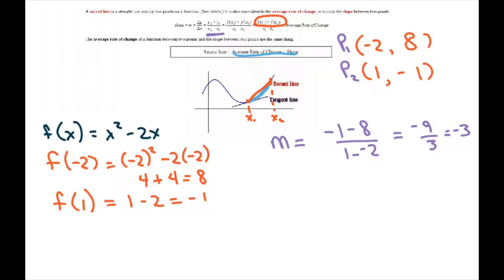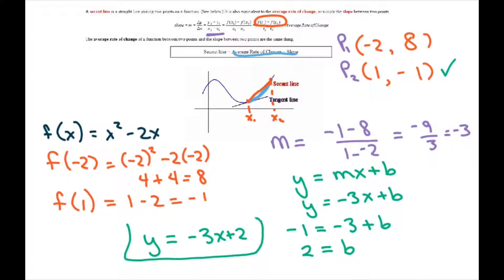Now to find the equation of the secant line, we just write y equals mx plus b. So I'm going to write y equals negative 3x plus b. And plug in one of these points. I'll plug in point 2. So we get negative 1 equals negative 3 plus b. You add the 3 to both sides. So you get 2 equals b. So your equation of your secant line is y equals negative 3x plus 2. You're just plugging this 2 back into this equation here.